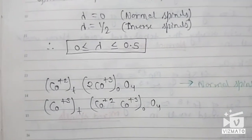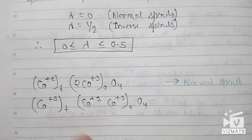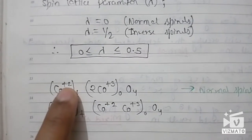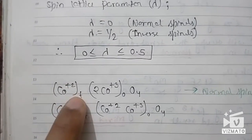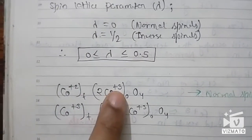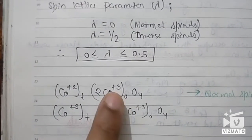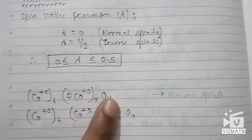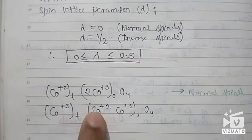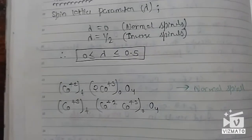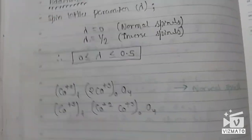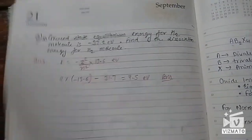There are other representations you should know: normal spinels are represented with the +2 cation in square brackets for the tetrahedral void and the +3 cation in parentheses for the octahedral void. The corresponding notation is different for inverse spinels and mixed spinels.